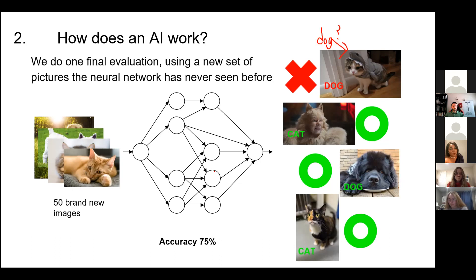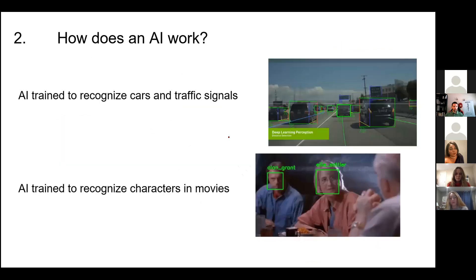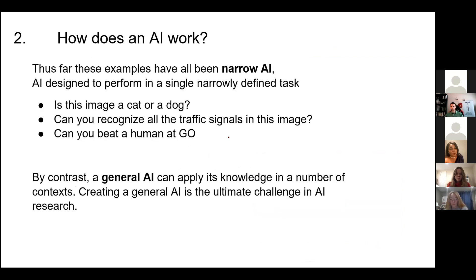A couple of disclaimers before we keep going. The examples I showed you — there's something called a narrow AI. That is, an AI designed to do one thing particularly well: recognize an image of a dog, spot a red light, play Go and beat a human. By contrast, a general AI is something that can apply its knowledge to a number of different contexts.